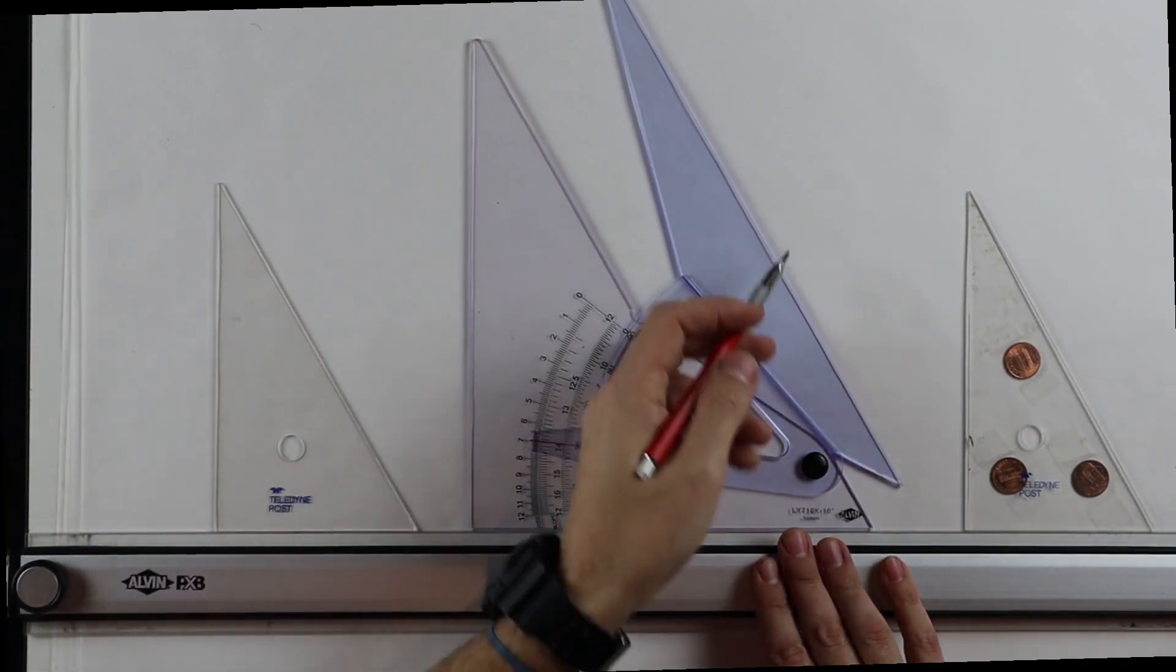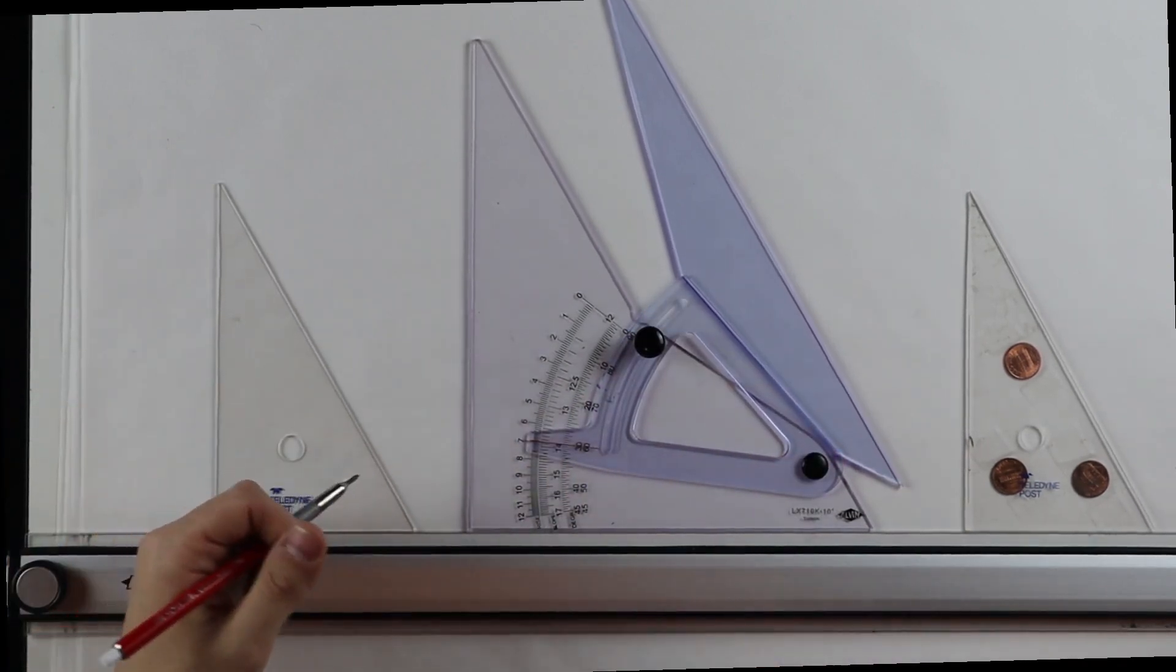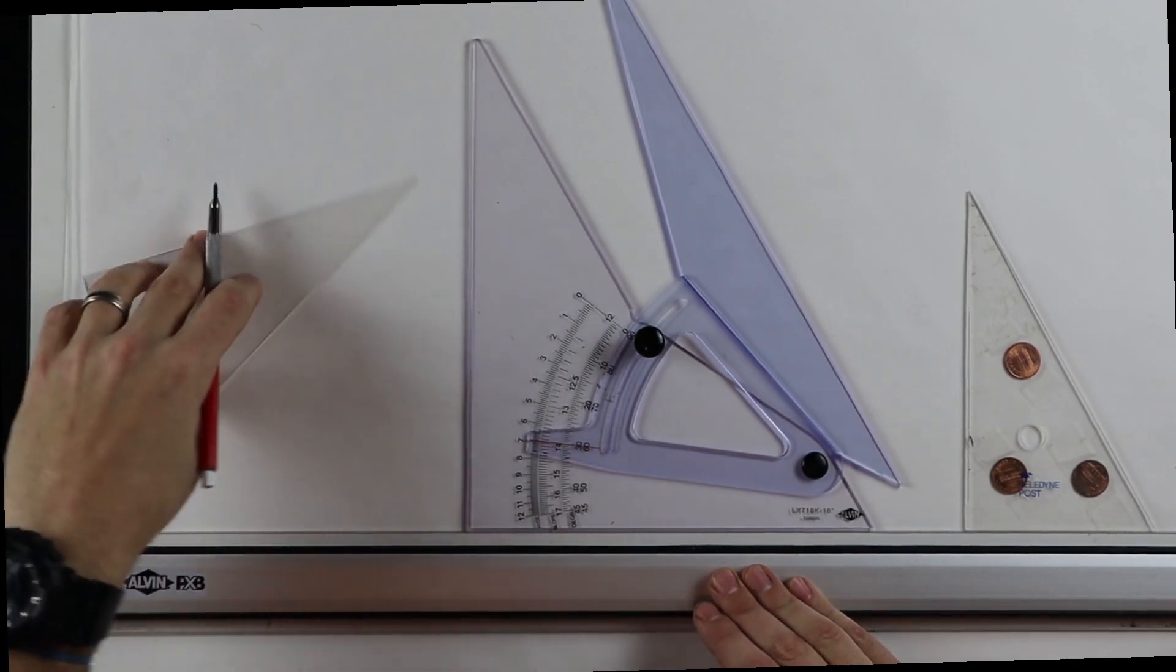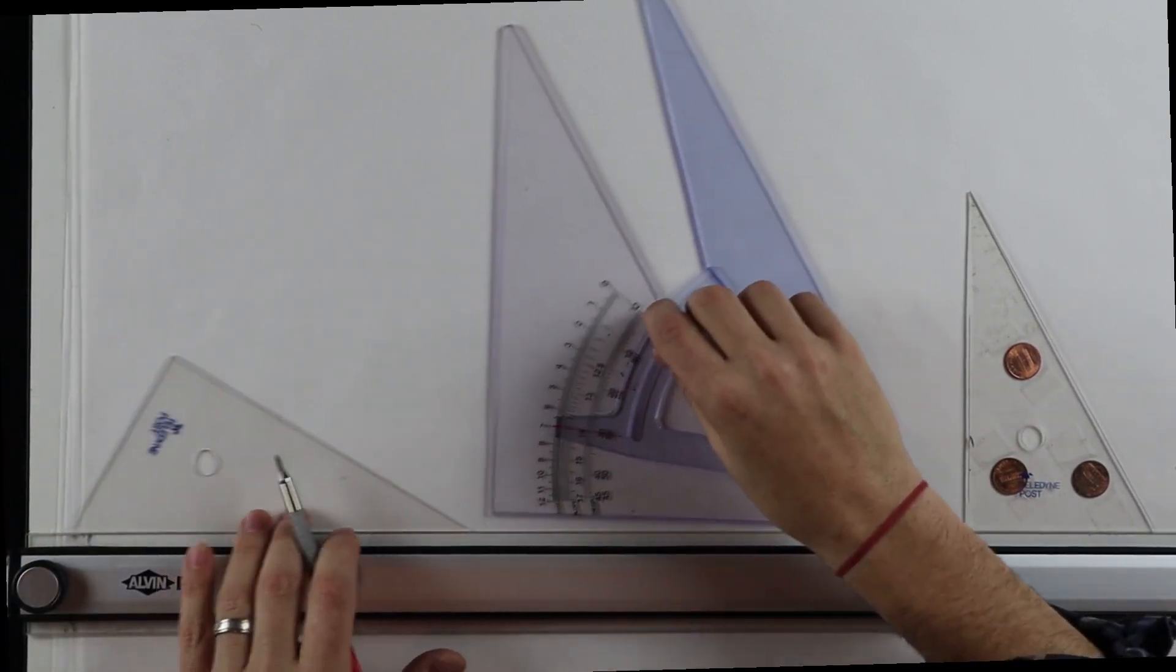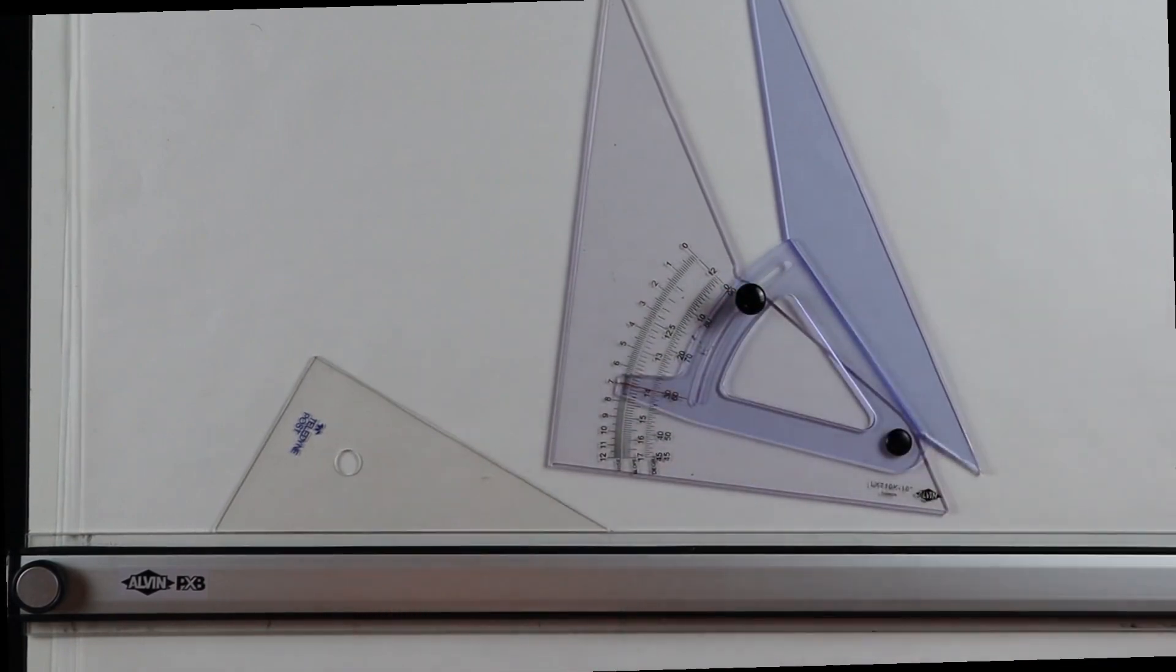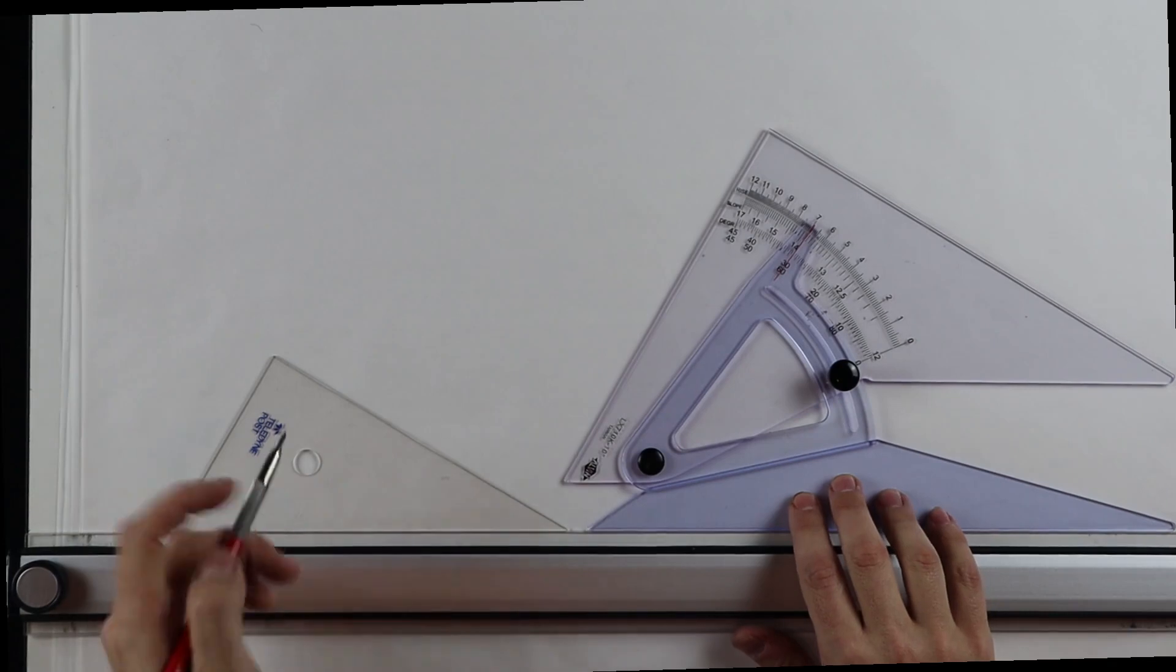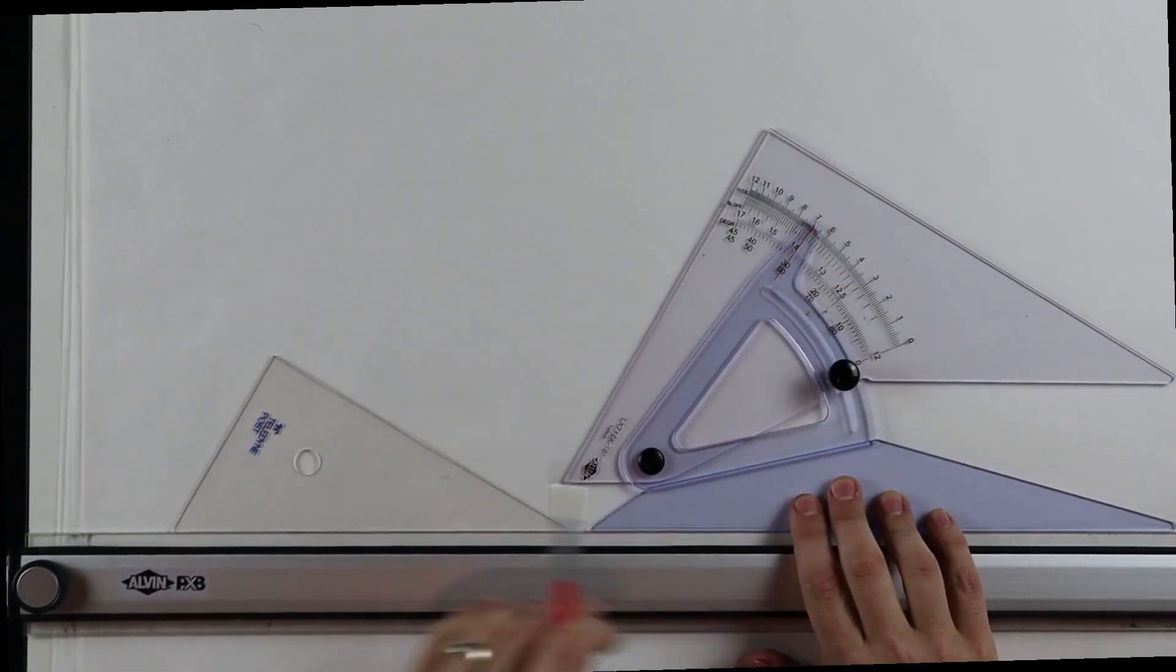So now if I wanted to make an angle for a roof pitch or for an elevation for a particular purpose, I can do that. And vice versa if I flip this so that it is the 30 degree angle, I could also do the same for my adjustable and now I have the exact same angle for the adjustable as my traditional.